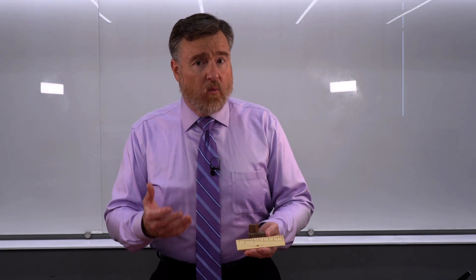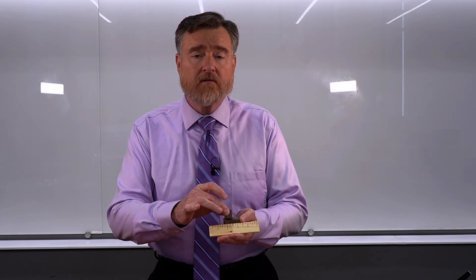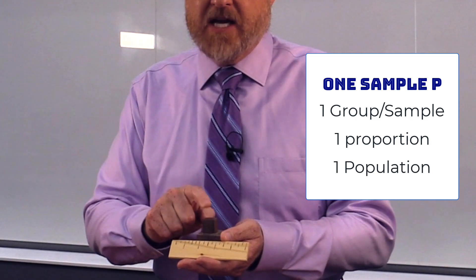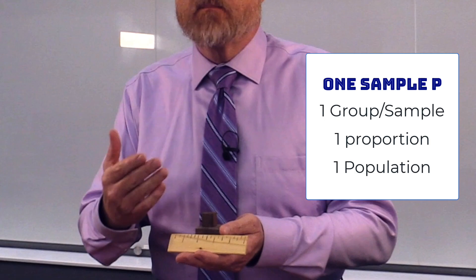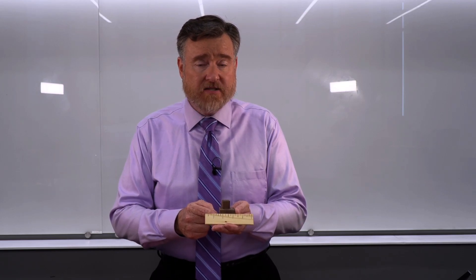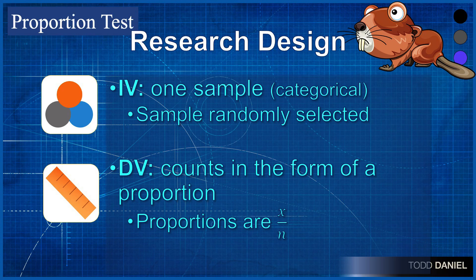The research design for our one sample proportion test is going to mimic that from our one sample z-test or t-test. We have a sample which has been drawn from a population. What is true of the population should be true of the sample drawn from that population. But now instead of measuring a mean, we're measuring a proportion — essentially counts within the data. We know 82 percent applies to the population. Does our sample proportion match our population proportion? The independent variable is one sample, which is categorical data, randomly selected from the population. The dependent variable would be counts, presented in the form of a proportion, calculated by dividing the number of raw scores by the total number of scores.